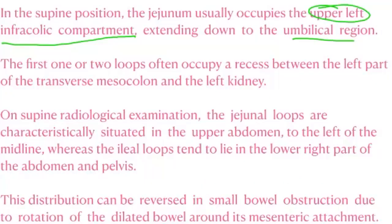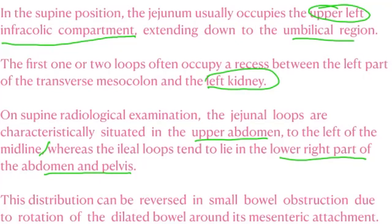The first one or two loops often occupy a recess between the left part of the transverse mesocolon or the left kidney. On supine radiological examination, jejunal loops are characteristically situated in the upper abdomen left of the midline, whereas ileal loops tend to lie in the lower right part of the abdomen and pelvis. This distribution can be reversed in small bowel obstruction due to rotation of the dilated bowel around the mesenteric attachment.